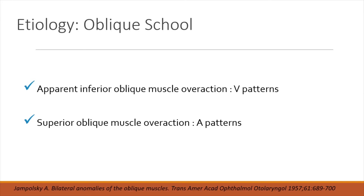Why does pattern strabismus occur? The most commonly accepted school of thought is oblique muscle dysfunction. When there is an apparent inferior oblique muscle overaction, we have V patterns. When there is an apparent superior oblique muscle overaction, we have A patterns.